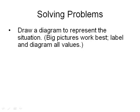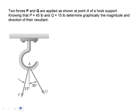The next part: draw a diagram that represents the situation. Big pictures work best — whenever possible you should work at a whiteboard, as you will get a lot more out of a large picture than a small picture. There is already a diagram in this problem, but we are going to add another diagram to emphasize the fact that we are doing this graphically. P is in a direction of 15 degrees from the vertical and has a magnitude of 45 pounds. Q is at 30 degrees but only has a magnitude of 15 pounds.